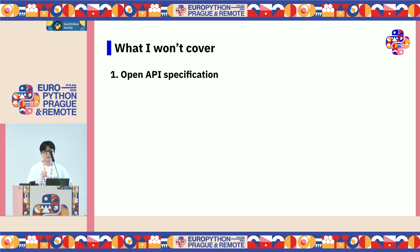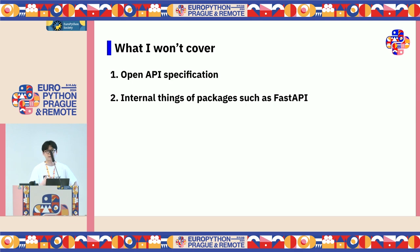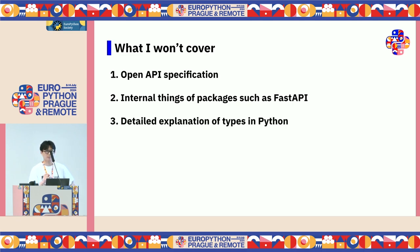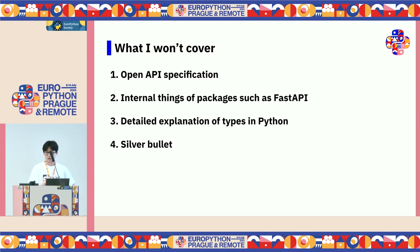What I will not cover in this presentation: first, the details of the OpenAPI specification. Second, the internal things of packages such as FastAPI. Third, the detailed explanation of types in Python. Lastly, the silver bullet. The things I will share are not the best solution for all cases, so you need to adapt them to your own situations.